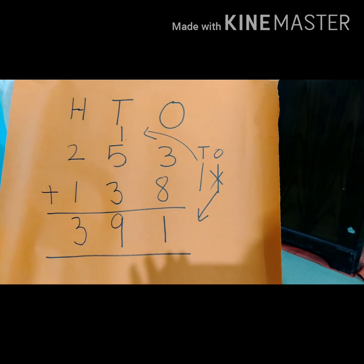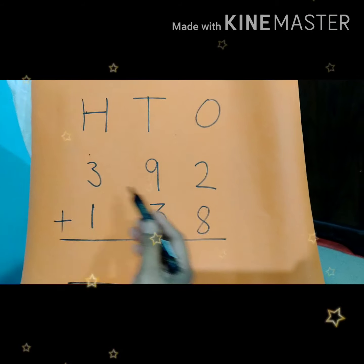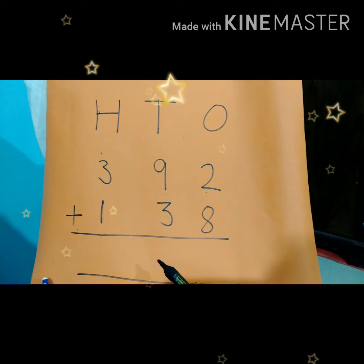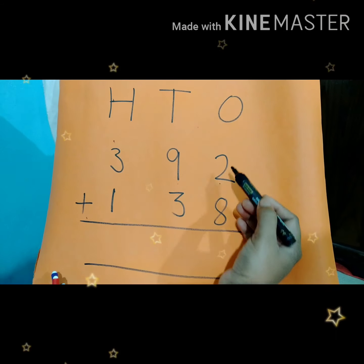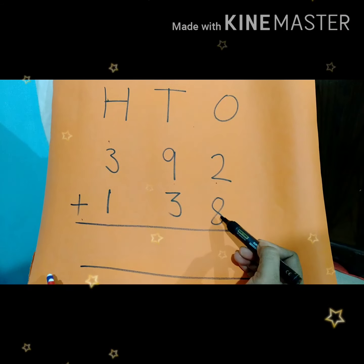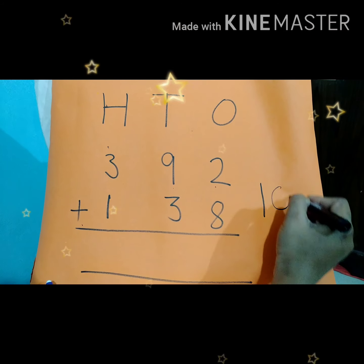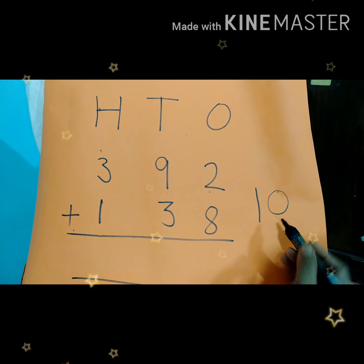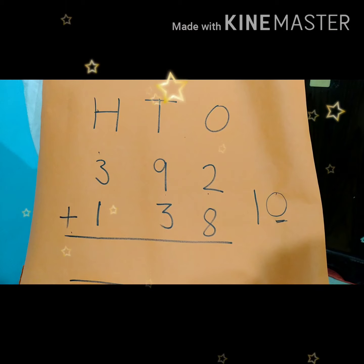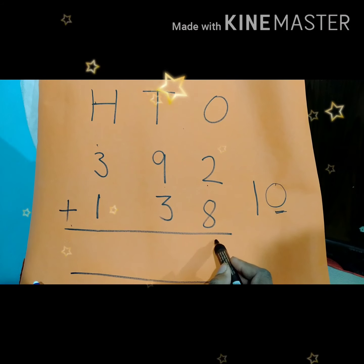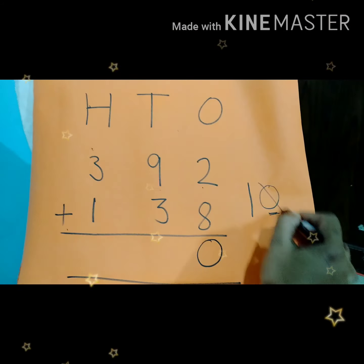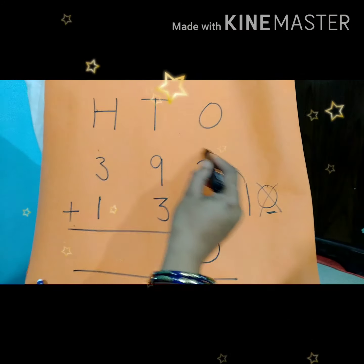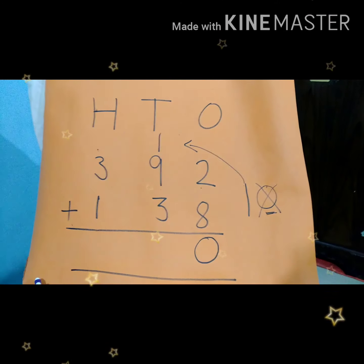Let's see one more example. Here we have numbers 392 plus 138. Again children, start from 1's place. 2 plus 8 is equal to 10. So what number is in 1's place? Yes, we have 0 in 1's place. So we can write this 0 below 1's place. Now we will strike it out. What is left? This 1. 1 will go as a carry to the 10's place.